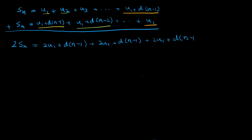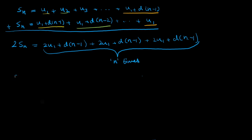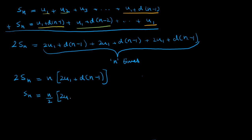When we add column-wise, we get 2 times Sn equal to 2u1 plus d into n minus 1. We're getting the same thing again for every pair, and those same terms are being added n times. So we condense this: 2Sn equals n times 2u1 plus d into n minus 1. Dividing both sides by 2, we get Sn equals n by 2 times 2u1 plus d into n minus 1. This is the formula given in the data booklet.